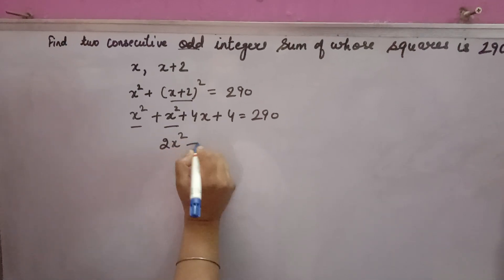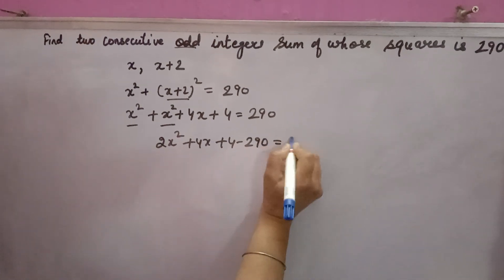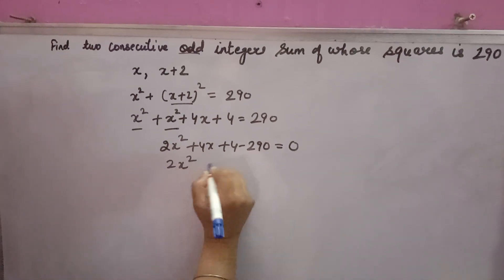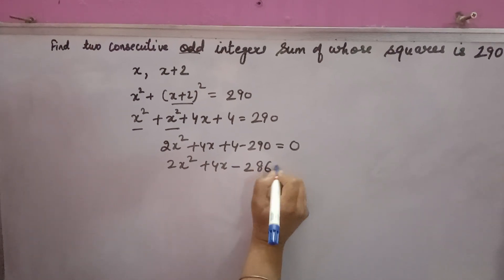Bring 290 to this side, it becomes minus 290 equals 0. So 2x squared plus 4x plus 4 minus 290 equals 0. 2x squared plus 4x, 4 minus 290 gives minus 286, equals 0.